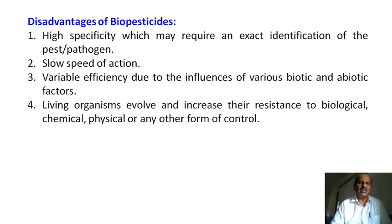Living organisms evolve and increase their resistance to biological, chemical, physical, or any other form of control. Some living organisms also adapt to the effect of biopesticides. Afterward, they can no longer be controlled because they have developed resistance in their body — biologically, chemically, and physically — to biopesticides.